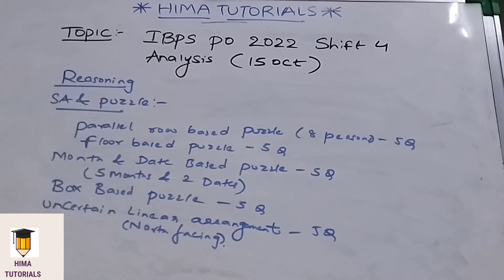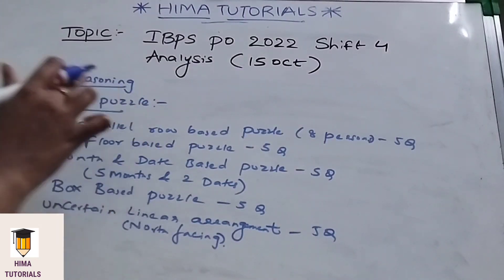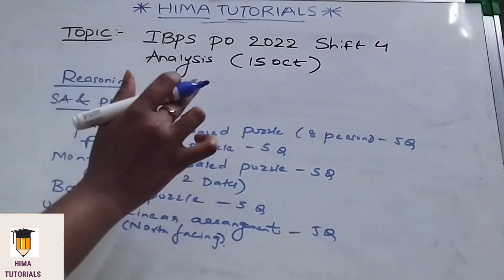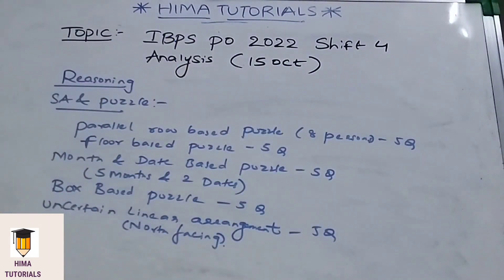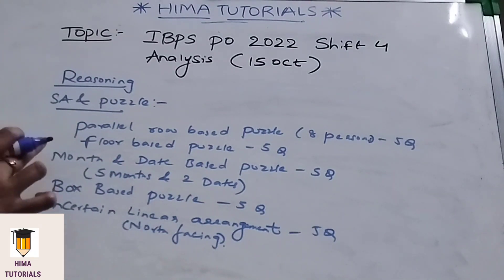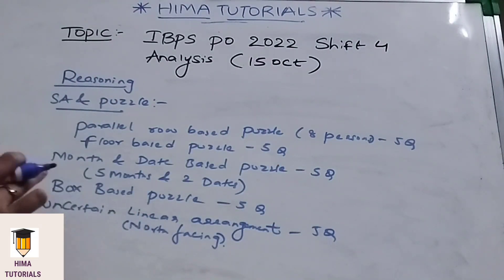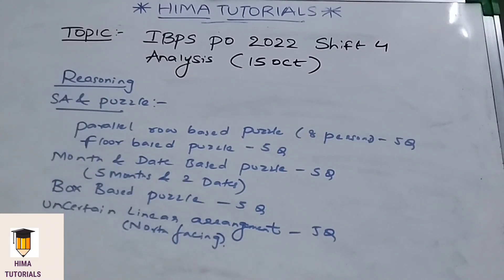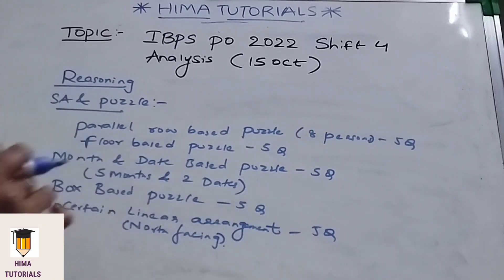Coming to the reasoning section, in the seating arrangement and puzzle topic, they have asked panel row based puzzle — 5 questions, floor based puzzle — 5 questions, month and date based puzzle — 5 questions, box based puzzle — 5 questions, and linear arrangement — 5 questions.